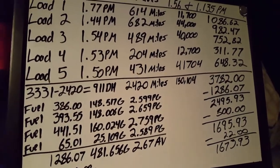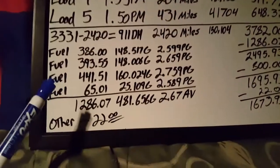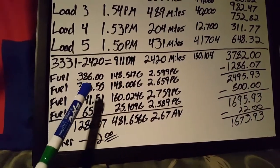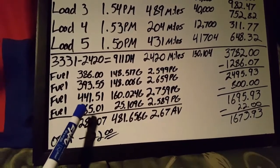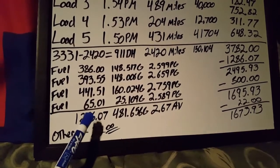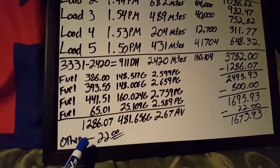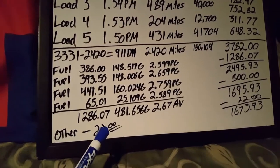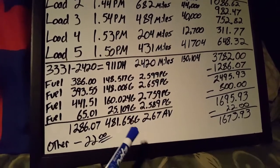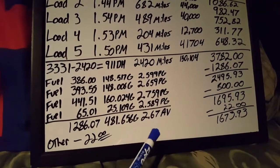Fueling: we had four fuels—$386, $393, $441, and $65 (just enough to get me to the house and back). Total fuel was $1,286, 481.656 gallons, average of $2.67 per gallon.